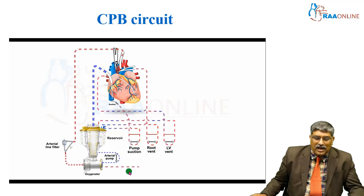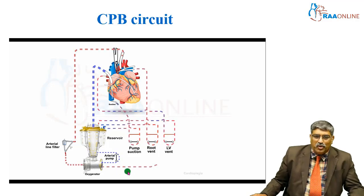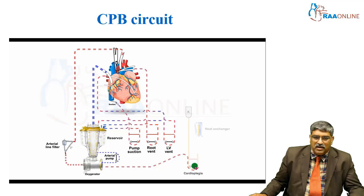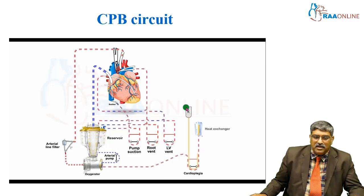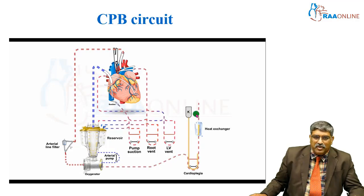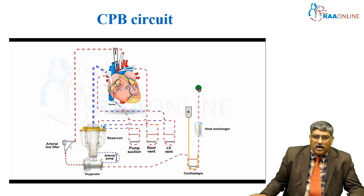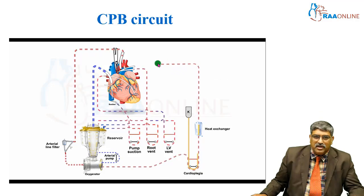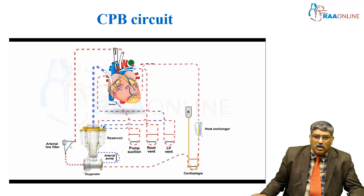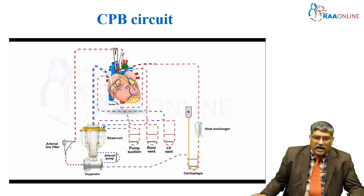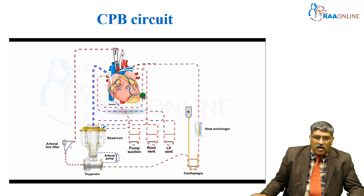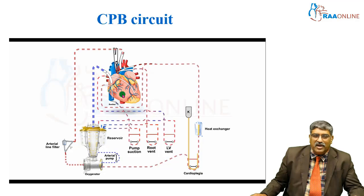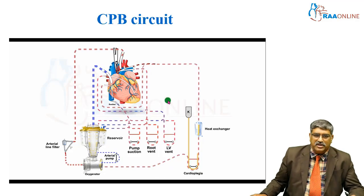Coming to the last part, you have the cardioplegia through the cardioplegia needle. It goes via a heat exchanger, and potassium is present in the cardioplegia. This cardioplegia is usually inserted into the aortic root, which is called antegrade cardioplegia, or it can be given via the coronary sinus, where it is called retrograde cardioplegia.